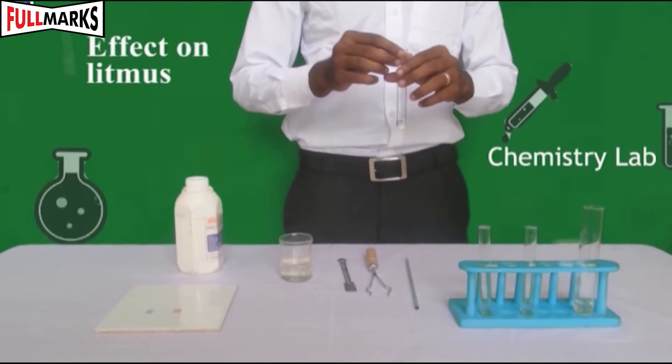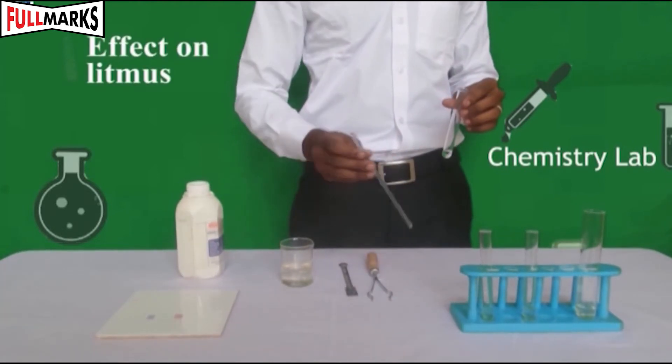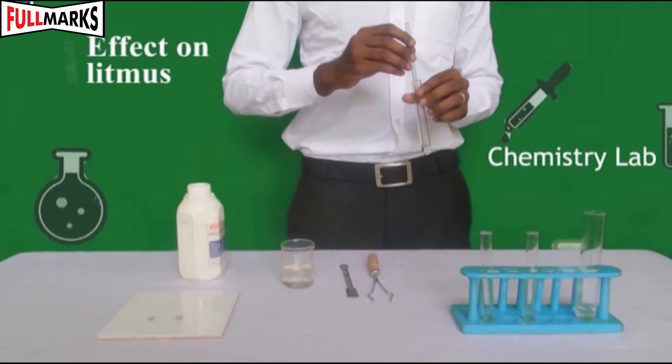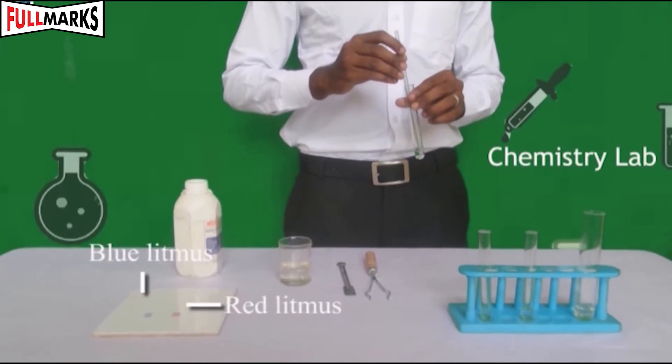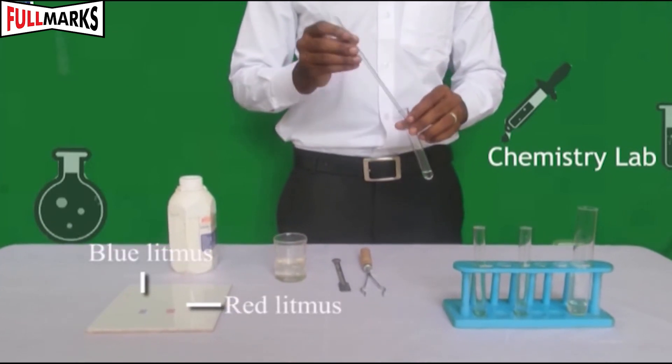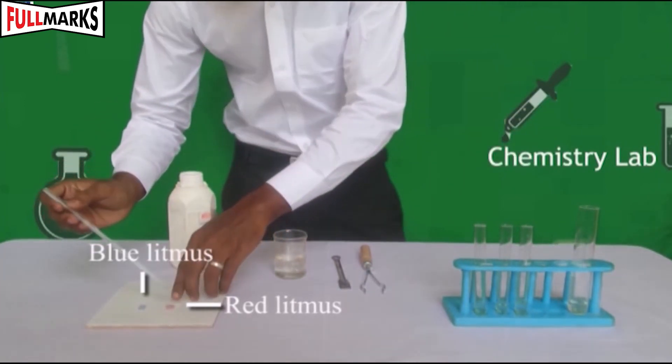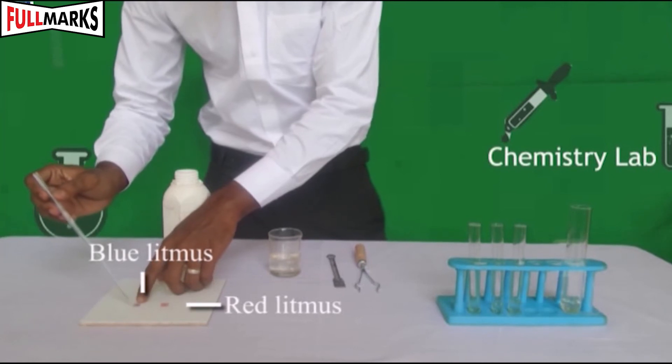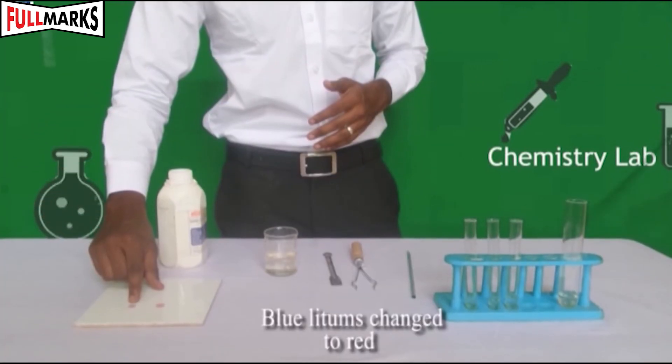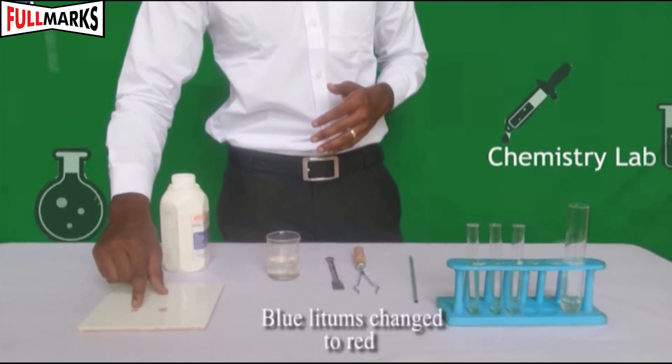Test 3: Effect on litmus. Use clean dropper and pour 1-2 drops of acetic acid on blue litmus paper. Blue litmus paper turns red.